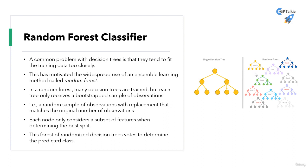But each of these trees only receives a bootstrapped sample of the observations. A bootstrapped sample of observations means that a random sample of observations is selected with replacement that matches the original number of observations.